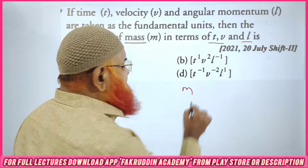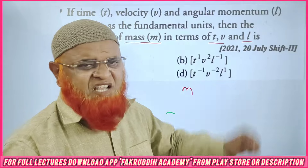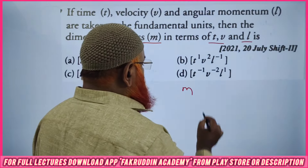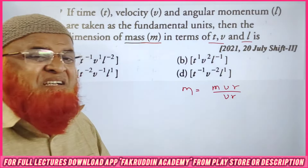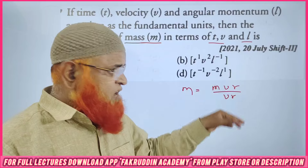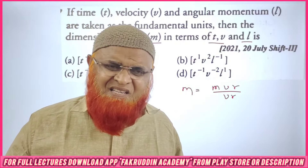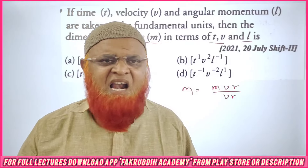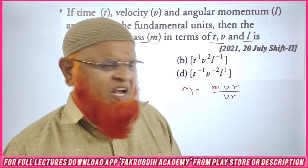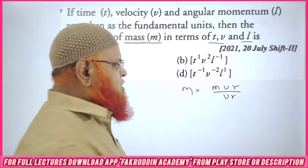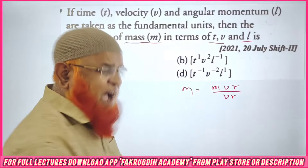What I am going to do is take mass and compare it in terms of time, velocity, and angular momentum. I am going to write mass as MVR divided by VR — I am creating one new formula. What is MVR? Angular momentum. You might have heard about angular momentum in chemistry — angular momentum is quantized; MVR equals NH by 2π. So I am writing MVR divided by VR because if you cancel VR, you will be getting mass again.